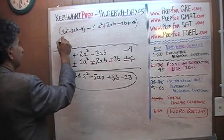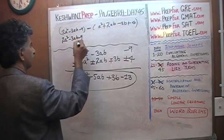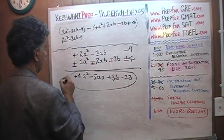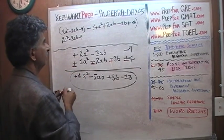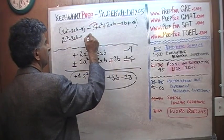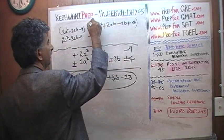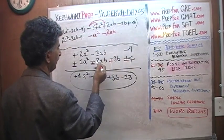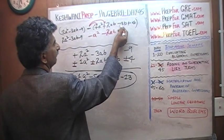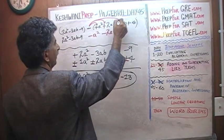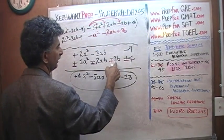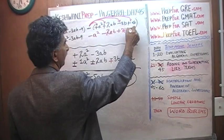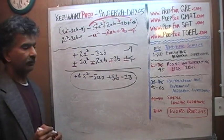In Method 2, the first expression 2a squared minus 3ab minus 9 just comes down as it is. The interesting part is opening the parentheses on the subtracted expression. This negative sign and the positive a squared become negative a squared. Negative times positive 2ab becomes negative 2ab. Negative times negative 3b becomes positive 3b. And negative times positive 4 becomes negative 4.